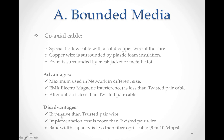Disadvantages: the cost of this wire is more than twisted pair cable. If the wire cost is more than twisted pair, then its implementation cost will also be more. Bandwidth capacity is less than fiber optic cable but more than twisted pair cable — that is 8 to 10 Mbps.